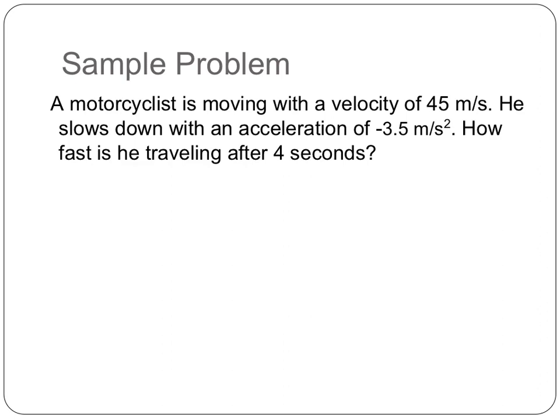All right, so a similar problem. A motorcyclist is moving with a velocity of 45 meters per second. He slows down with an acceleration of negative 3.5 meters per second squared. How fast is he traveling after 4 seconds? All right, I read it and underlined. Now I need to write down my variables.